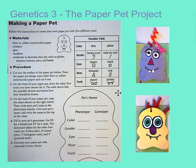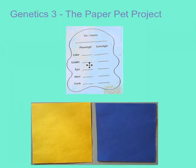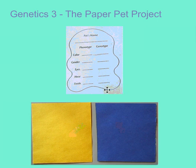Choose your traits and fill them in where it says phenotype. Color, you'll choose blue or yellow; gender, male or female. Choose the traits you want and write them under phenotype, because phenotype is what the organism looks like. Once you choose all the traits and fill in the phenotype, go get either the yellow or blue paper that you need. You'll glue this back onto the paper and then cut out the shape for the paper pet.